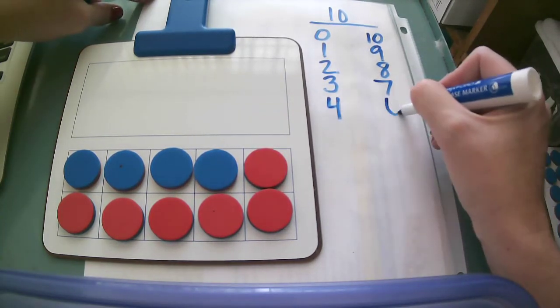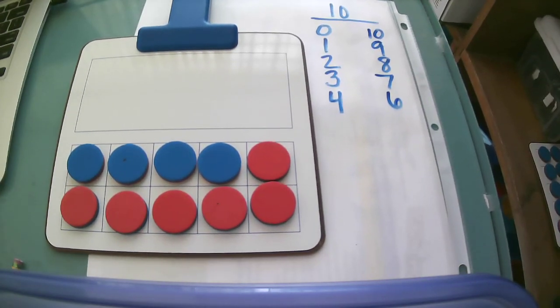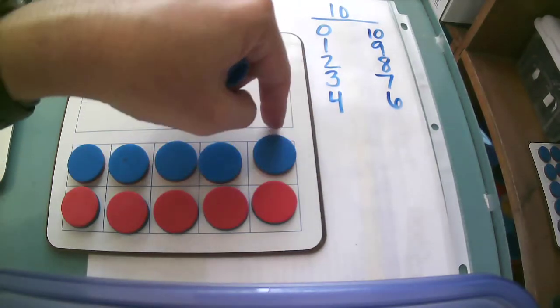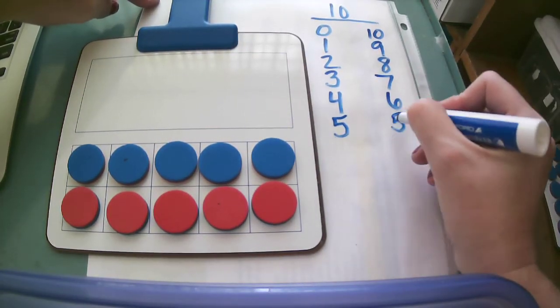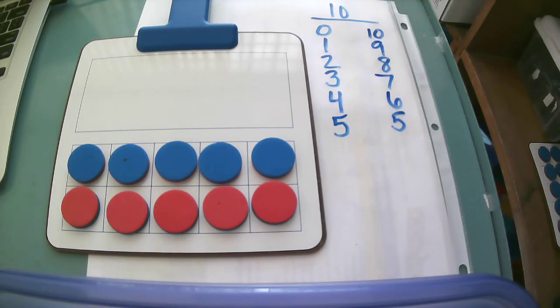And now I have four blue and six red. And now I have five blue and five red, because five and five are doubles that give me ten.